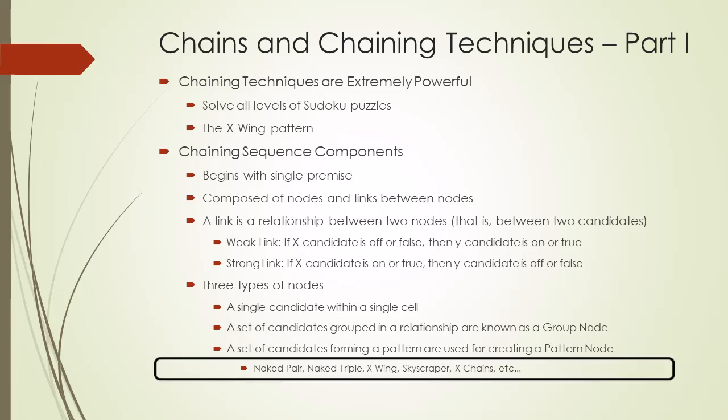The most common pattern nodes used in chaining sequences are naked pair, naked triple, X-wing, skyscraper, and the X-chain. See DX Sudoku video number 103 for examples of using pattern nodes in chaining sequences.